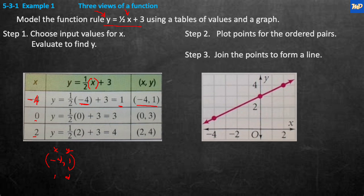For x = 0: ½ × 0 = 0, plus 3 = 3. So the ordered pair is (0, 3). For x = 2: ½ × 2 = 1, plus 3 = 4. So the ordered pair is (2, 4).